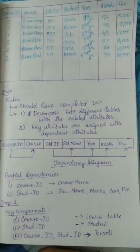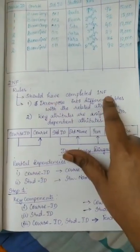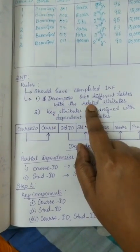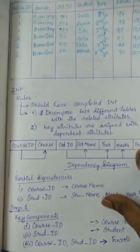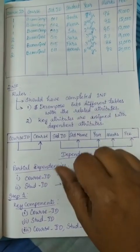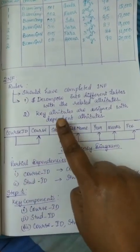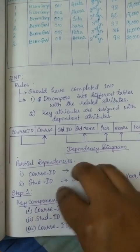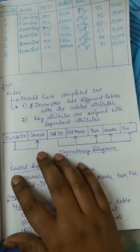Now we have completed the First Normal Form and are entering the Second Normal Form. In order to enter the Second Normal Form, the First Normal Form should be completed. In the Second Normal Form, we are going to do decomposing of the different tables. We are going to check the dependencies of the different attributes on the primary key especially, and decompose the whole table into different sub-tables. We are also going to assign a primary key to every table we create.